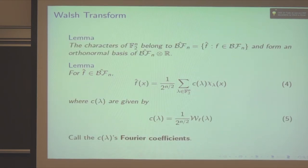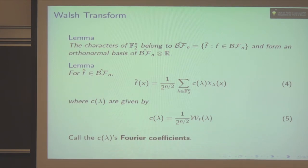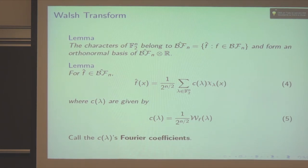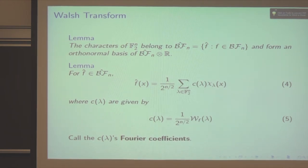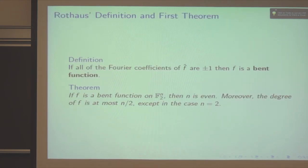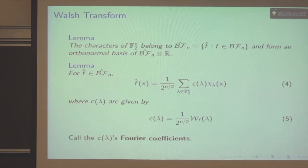From the Walsh transforms, we can write each pseudo-Boolean function as a linear combination of the characters of GF(2)^n. There's a normalization coefficient in front of the summation, and each c(lambda) is a normalized Walsh transform — essentially a normalized Fourier coefficient. In different papers, some authors normalize it and some don't; it doesn't make a significant difference and depends on what you're doing.